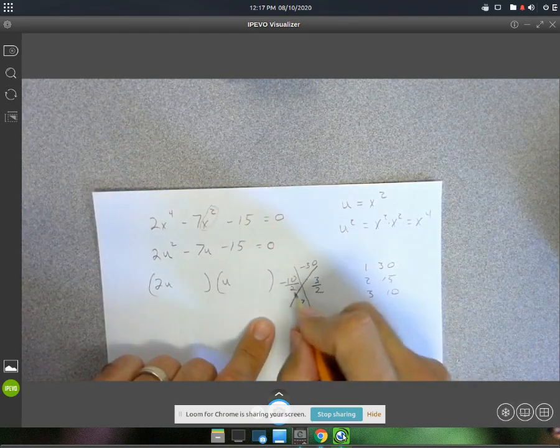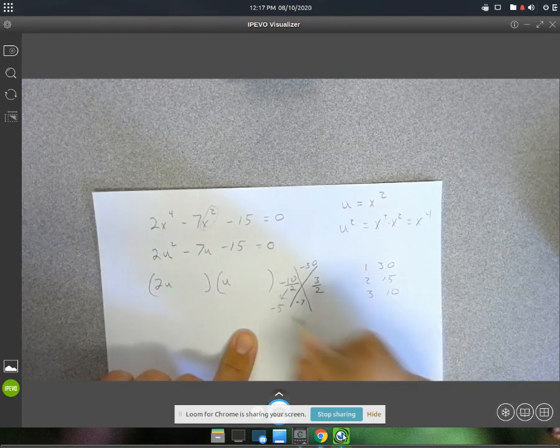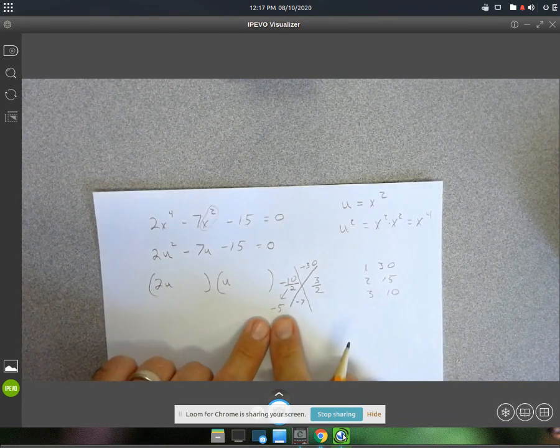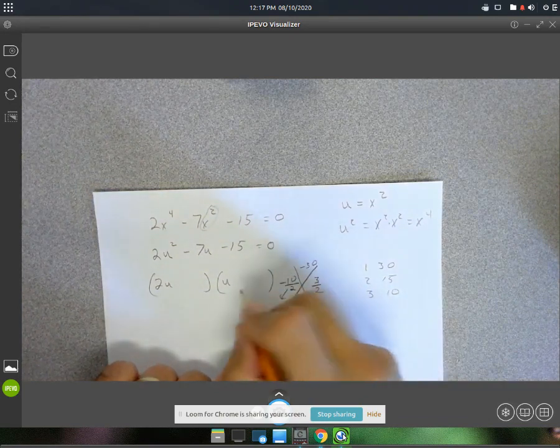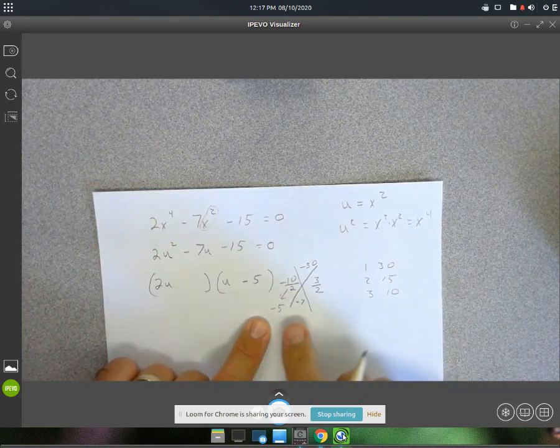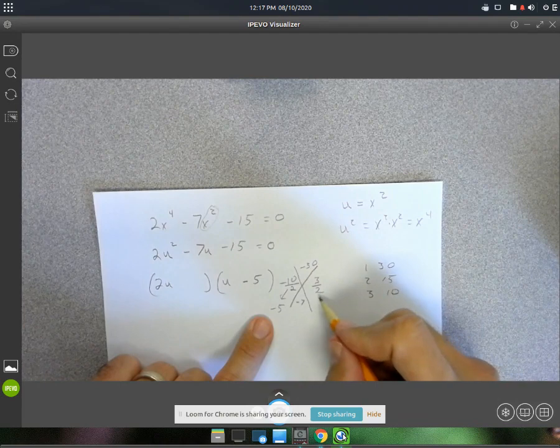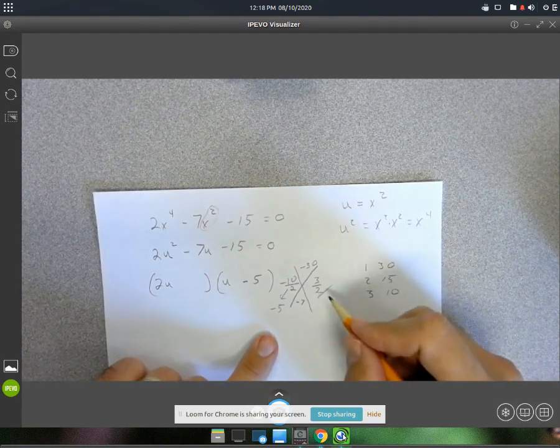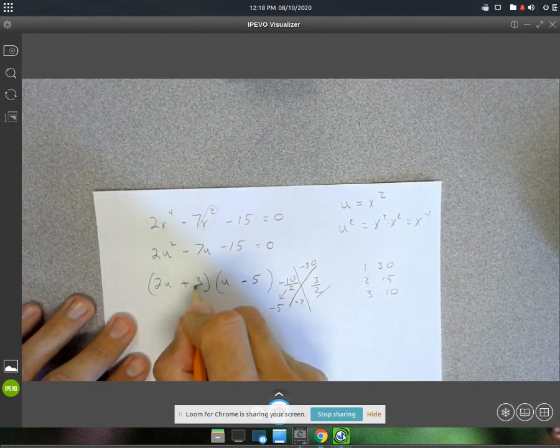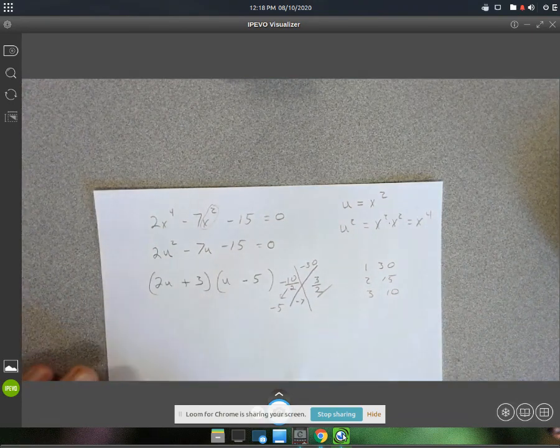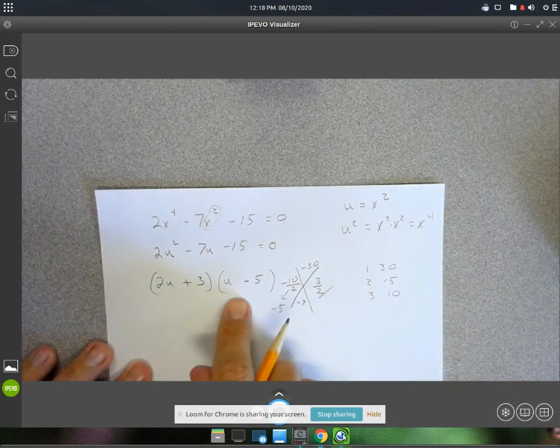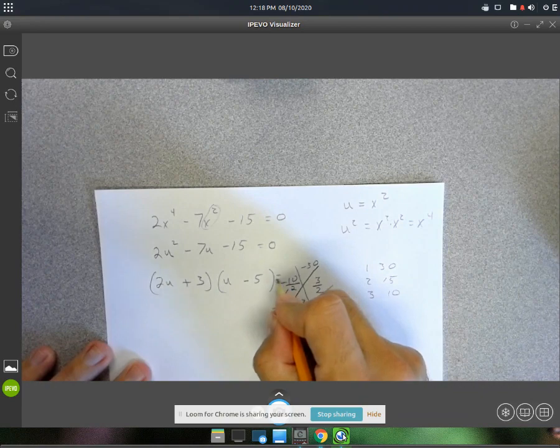Okay, so this one is going to be negative 5. So I'm going to have a u minus 5. That's one of them. And then for this one, that's going to be a 2u plus 3. There we go. So I've got this stuff. That is all equal to 0.